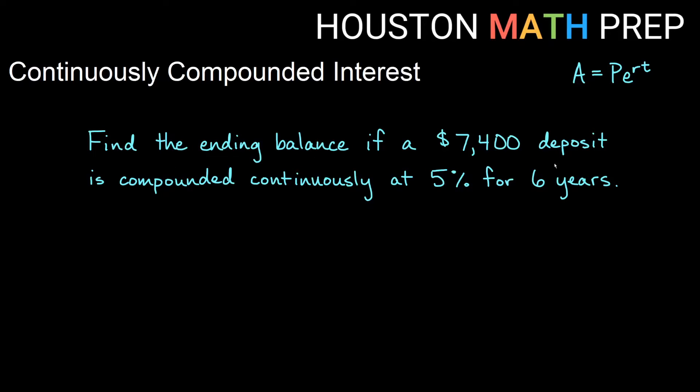Let's find the ending balance if a $7,400 deposit is compounded continuously at 5% for 6 years. So we want to notice we're finding the ending balance, that means we're finding A, our $7,400 deposit tells us that this amount is P, compounding continuously, which tells us right away, when we see this compounded continuously, this is definitely the formula that we're using. Our rate is 5%, so this part here tells us that rate is equal to 0.05, and 6 years tells us that t is 6.